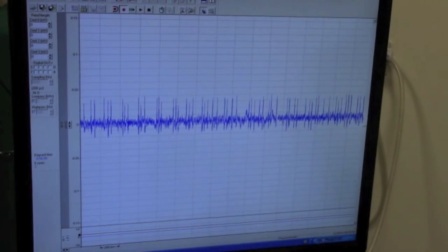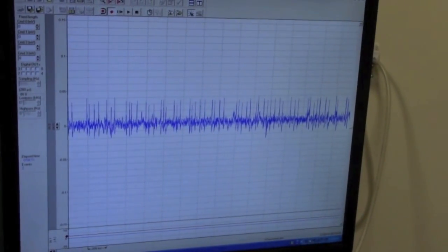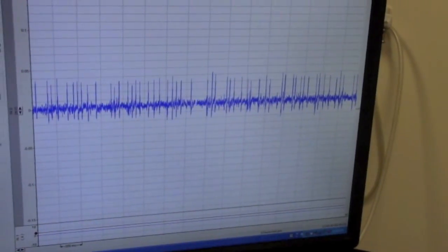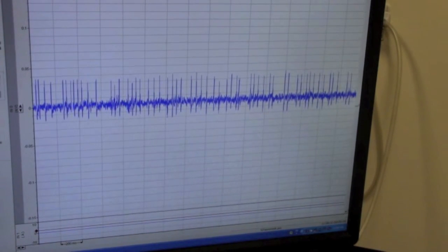So now we've increased the firing rate of the CO2 neuron by increasing the ambient amount of CO2 going over it. And if we introduce an inhibitor, we should see a decrease in its firing rate.